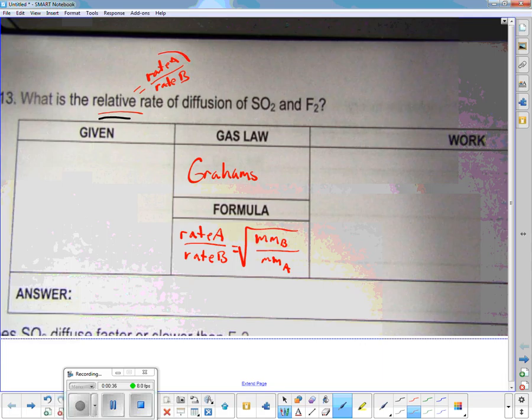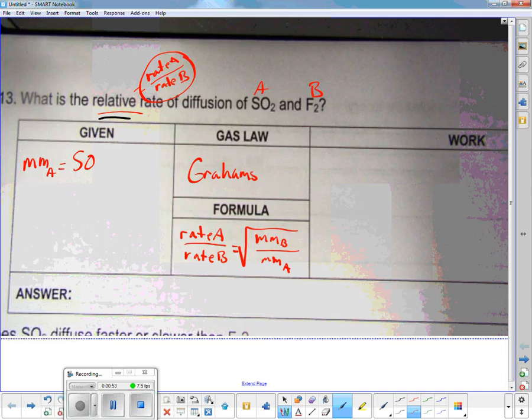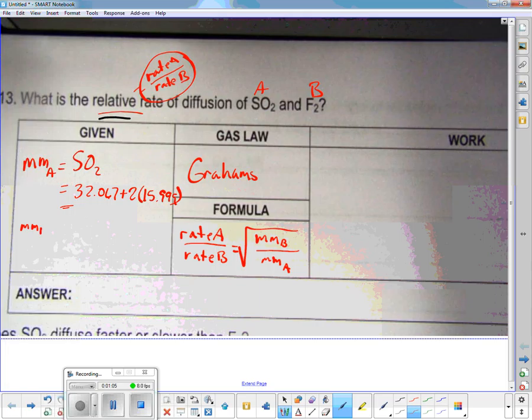The formula for Graham's Law is rate A divided by rate B equals square root of molecular mass B over molecular mass A. When it says relative rate, it wants rate A divided by rate B. That's one number for this whole thing. Whatever comes first is A, whatever second is B, and I just add up the molecular mass.